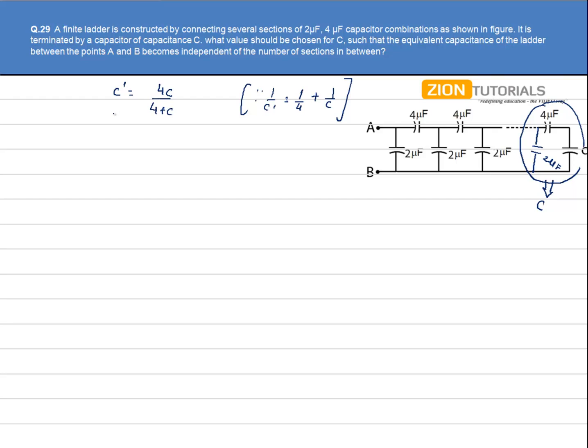Now this equivalent is in parallel with 2uF, and whose resultant has to be equal to C. So we have C equal to 4C divided by 4 plus C, plus 2. Now on solving this equation, we have C into 4 plus C is equal to 4C plus 2 times of 4 plus C. So it comes 4C plus 8 plus 2C.